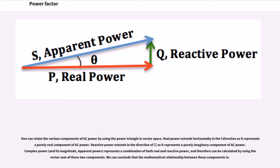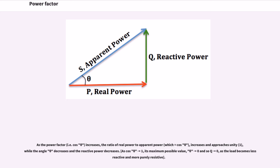One can relate the various components of AC power by using the power triangle in vector space. Real power extends horizontally in the I-hat direction as it represents a purely real component of AC power. Complex power represents a combination of both real and reactive power, and therefore can be calculated by using the vector sum of these two components. As the power factor increases, the ratio of real power to apparent power increases and approaches unity, while the angle theta decreases and the reactive power decreases.